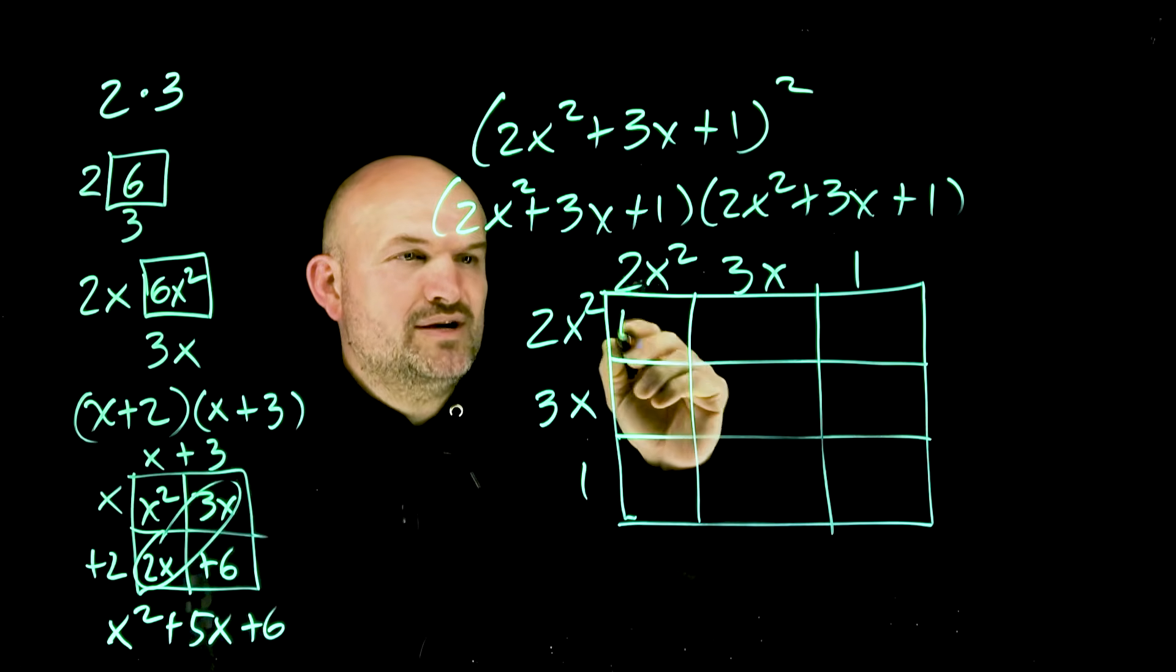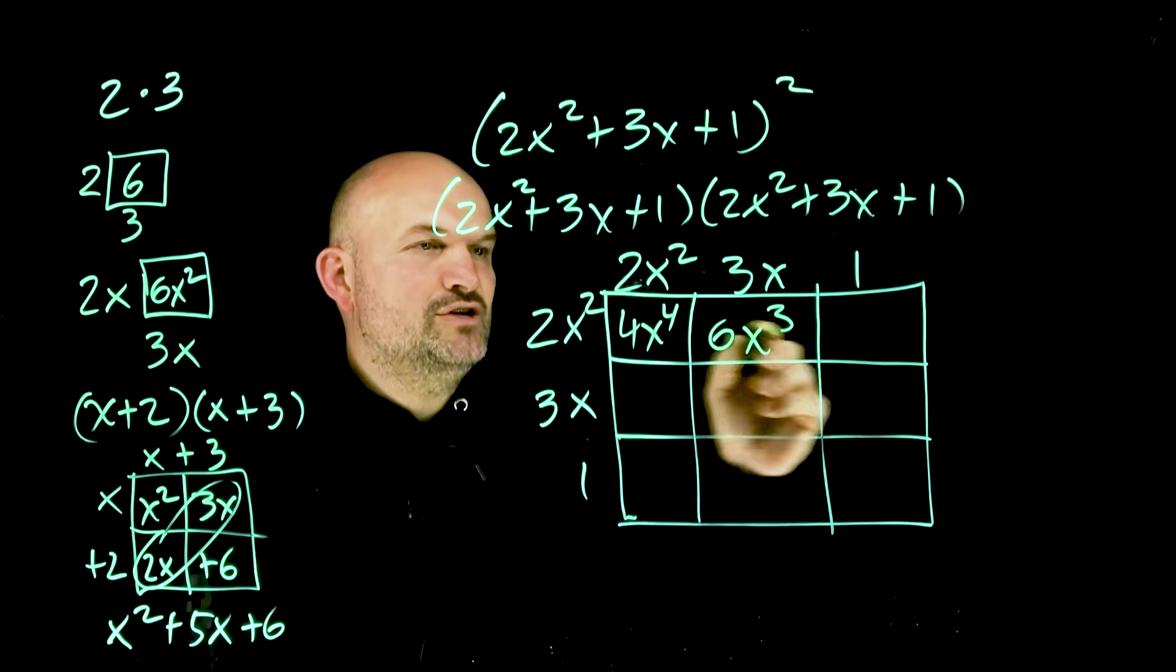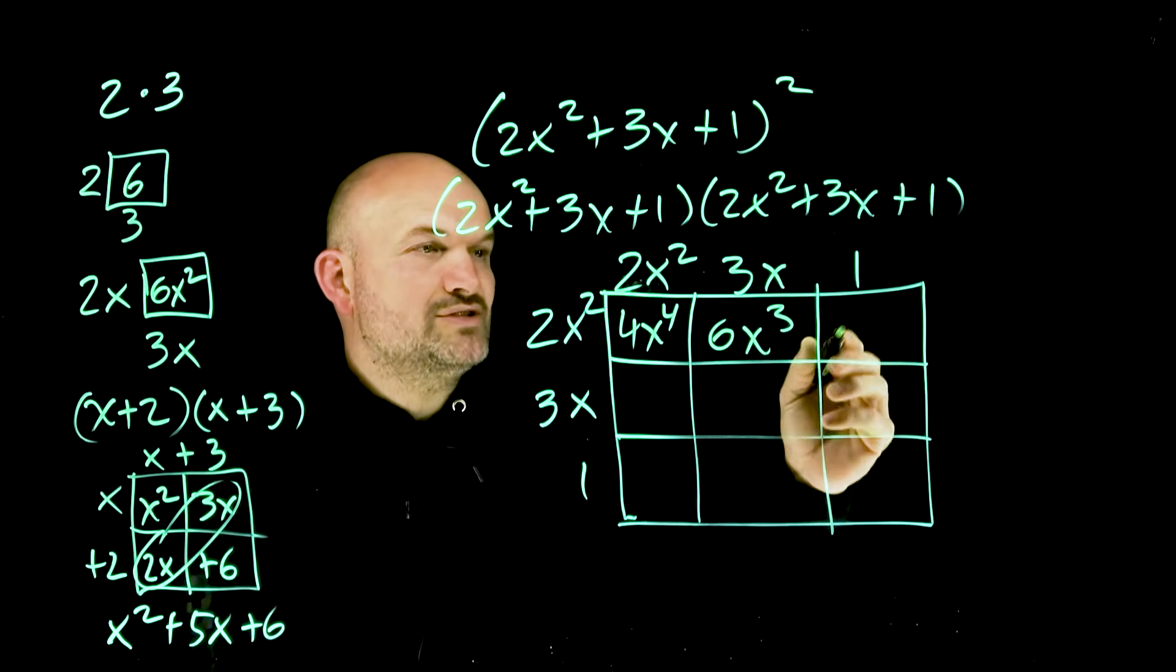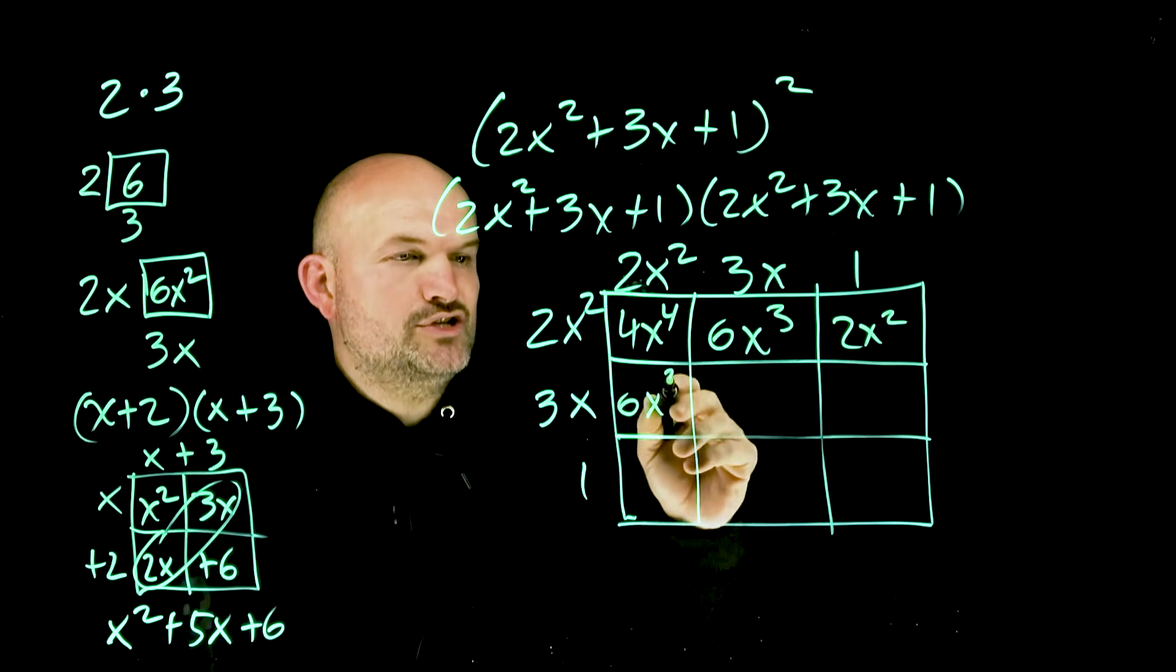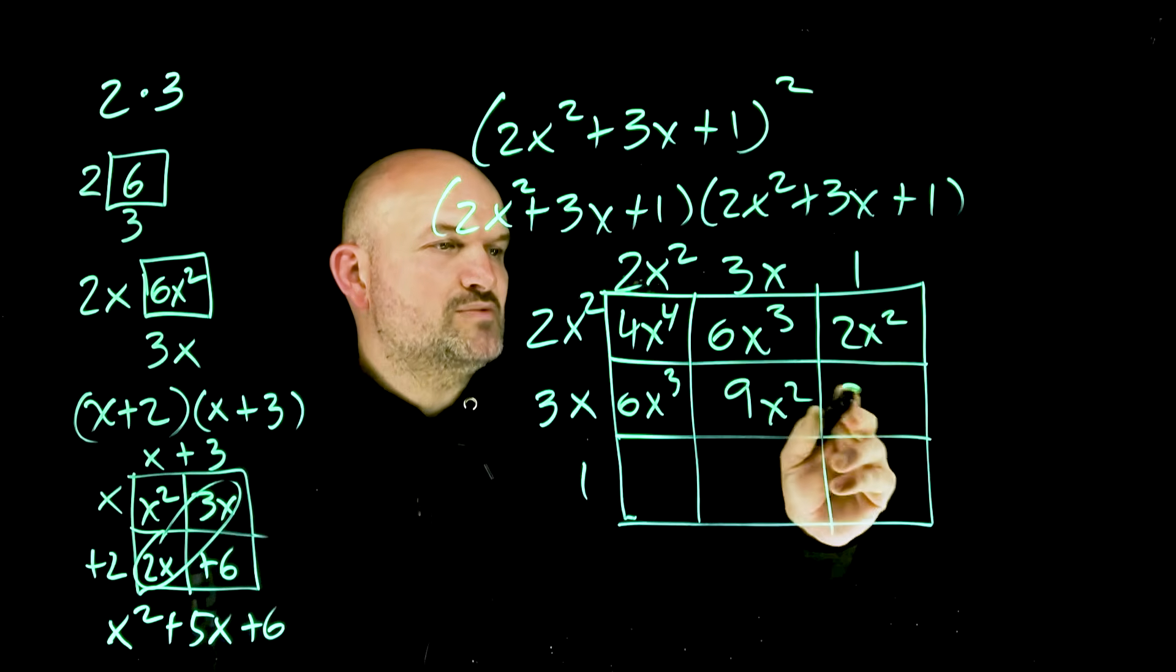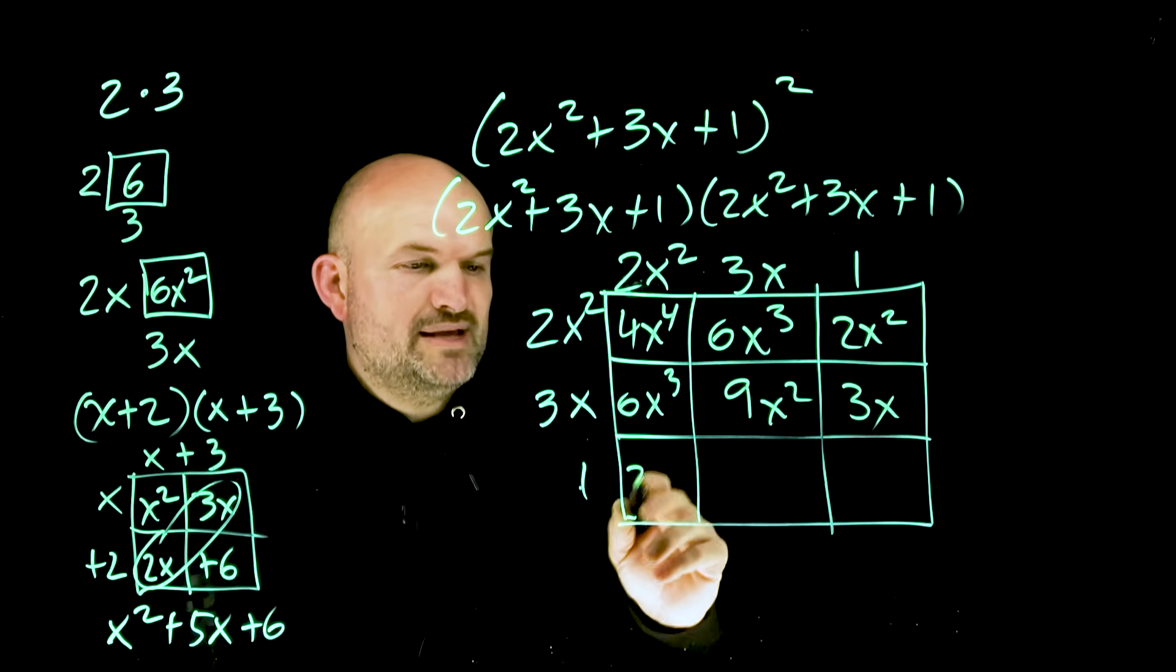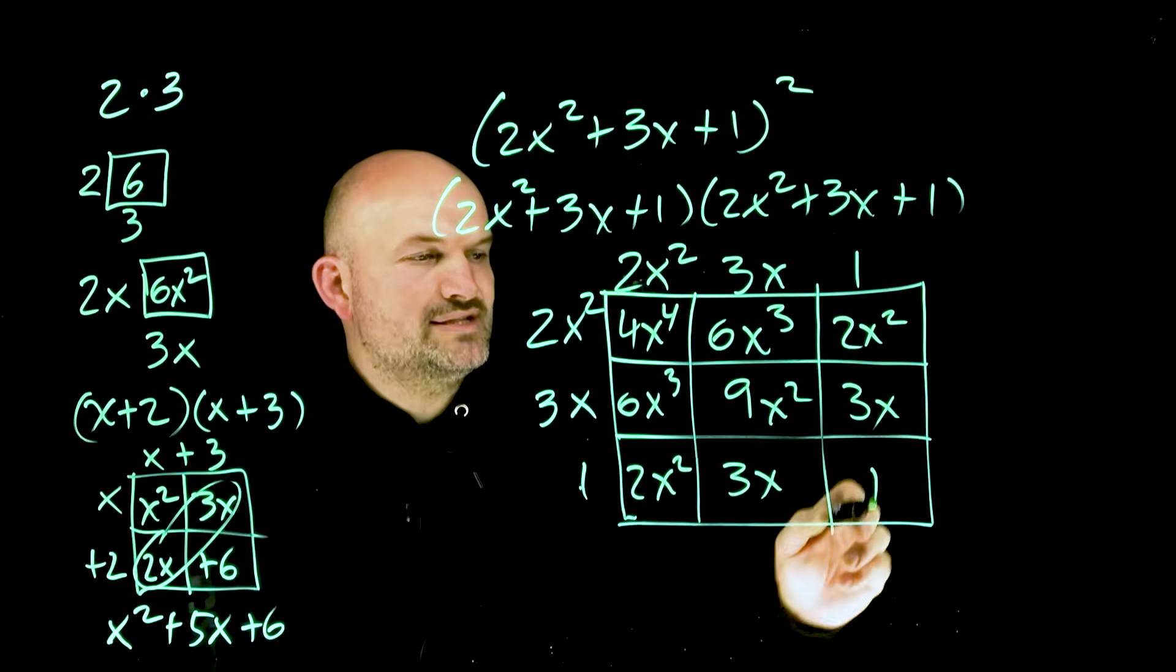So, 2x² times 2x² is 4x⁴, 2x² times 3x is 6x³, 2x² times 1 is 2x². 3x times 2x² is 6x³, 3x times 3x is 9x², 3x times 1 is 3x. 1 times 2x² is 2x², 1 times 3x is 3x, 1 times 1 is 1.